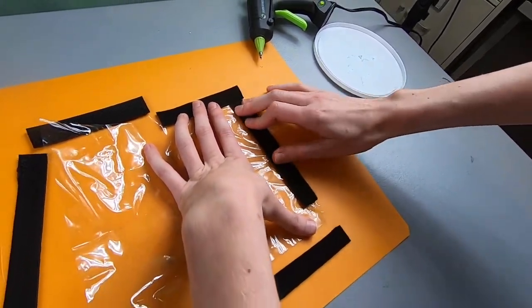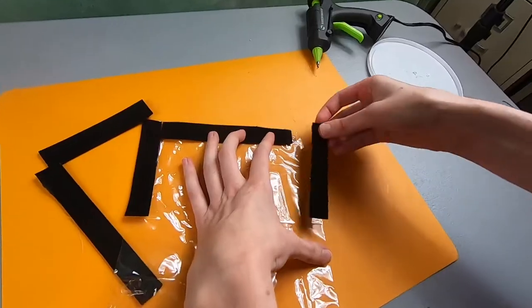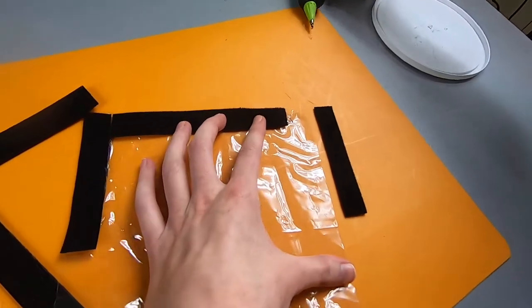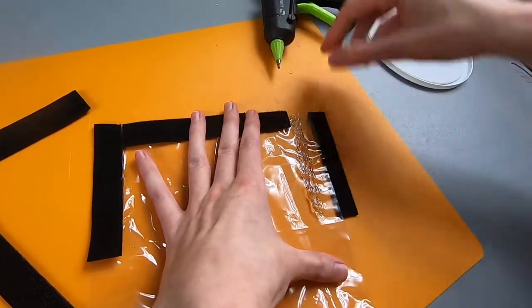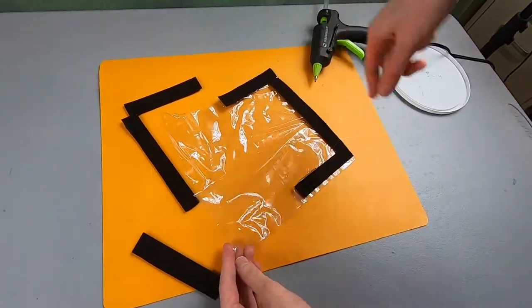And also be careful that you don't melt your plastic with the tip of the hot glue gun if you're going with the hot glue method. Over here along the bottom, and then just gonna repeat on the opposite side.